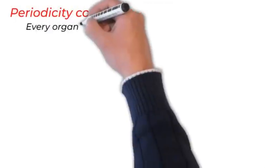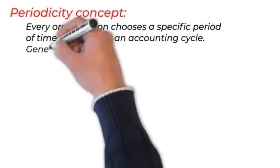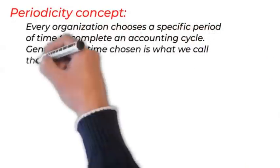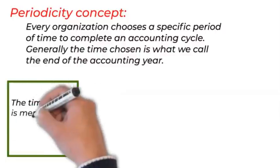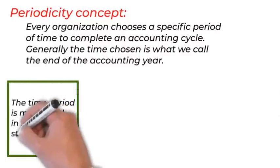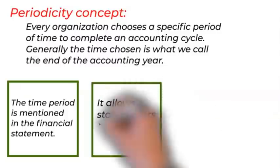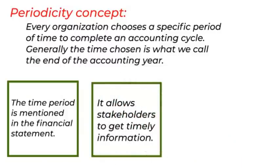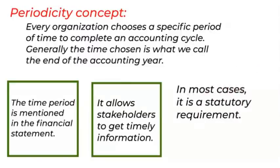Periodicity. Every organization chooses a specific period of time to complete an accounting cycle. Generally, the time chosen is what we call the end of the accounting year. It will continue at regular intervals, usually a year. The time period is mentioned in the financial statement. This facilitates comparison of performances.